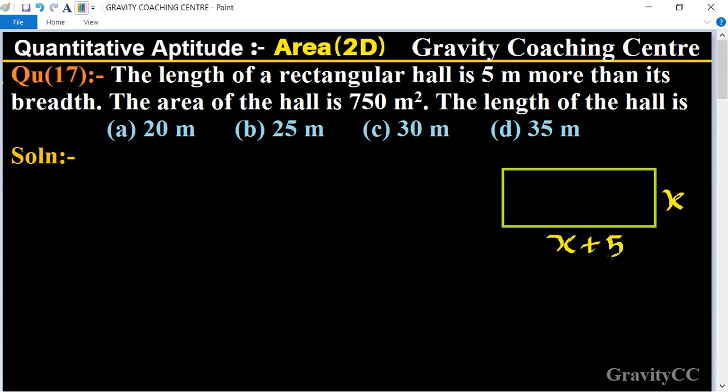the question, the area of the hall is given as 750 square meters. We know that the formula of area is length times breadth. So length is x plus 5 and breadth is x, equal to